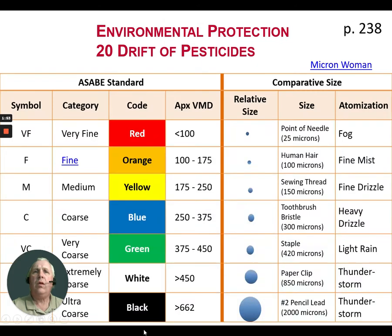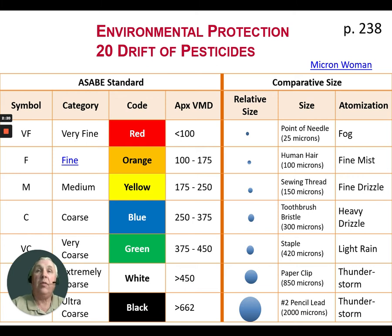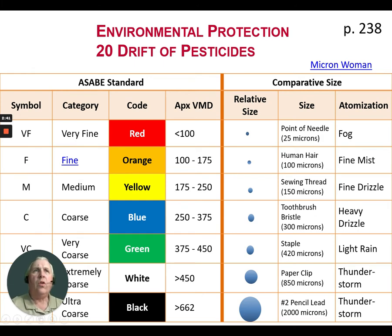Today we have numerous nozzles that can create different droplet sizes. We can create very fine droplets down to 25 microns, which is almost like a fog. Medium coarse droplets are like a fine drizzle at 150 microns. Coarse droplets are more like a heavy drizzle at 300 microns — double the size of medium. At the very bottom we now have ultra coarse droplet sizes at 2,000 microns, almost like the giant drops you see at the start of a thunderstorm.